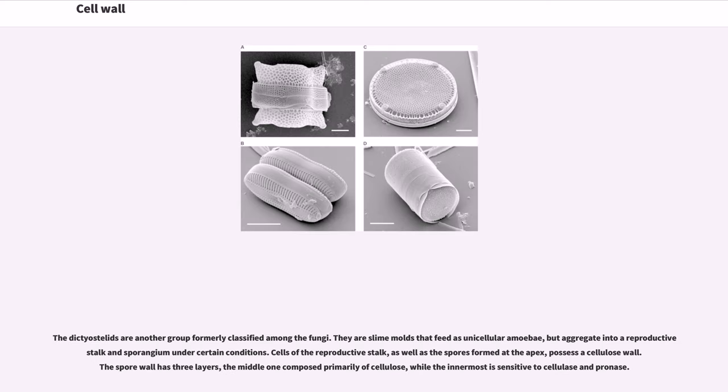The dictyostelids are another group formerly classified among the fungi. They are slime molds that feed as unicellular amoebae, but aggregate into a reproductive stalk and sporangium under certain conditions. Cells of the reproductive stalk, as well as the spores formed at the apex, possess a cellulose wall. The spore wall has three layers, the middle one composed primarily of cellulose, while the innermost is sensitive to cellulase and pronase.